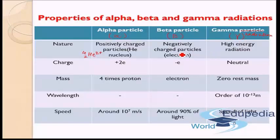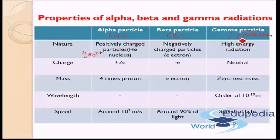They might not be emitted together; in different cases different things might be emitted. Normally what happens is alpha emission goes together with gamma radiation, or a beta particle emission goes with gamma radiation. Alpha and beta do not get emitted together. Now let us see the charge for the different particles.